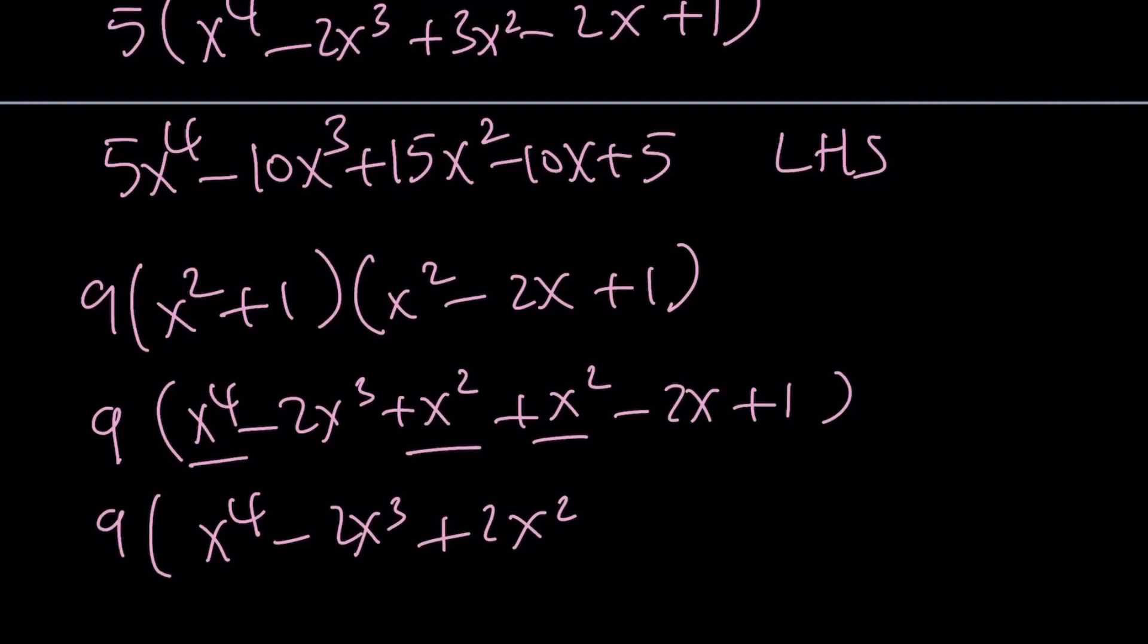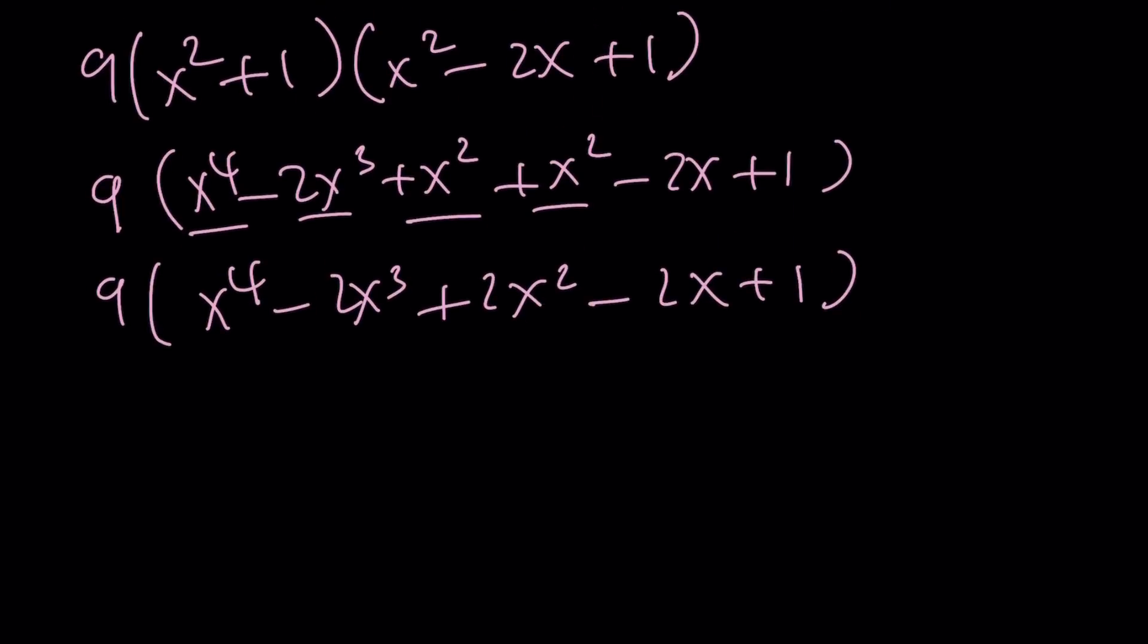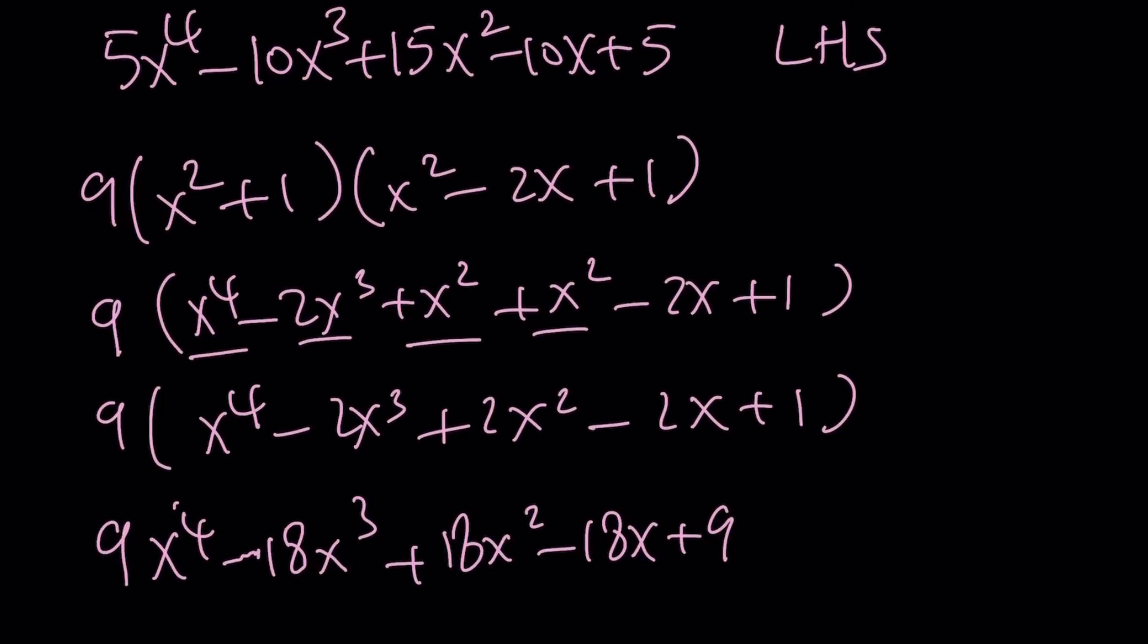Here we're going to get x to the fourth, then negative 2x cubed plus 2x squared, then minus 2x plus 1. If I expand it, 9x to the fourth minus 18x cubed plus 18x squared minus 18x plus 9, and this is supposed to equal that, so let's put it together.